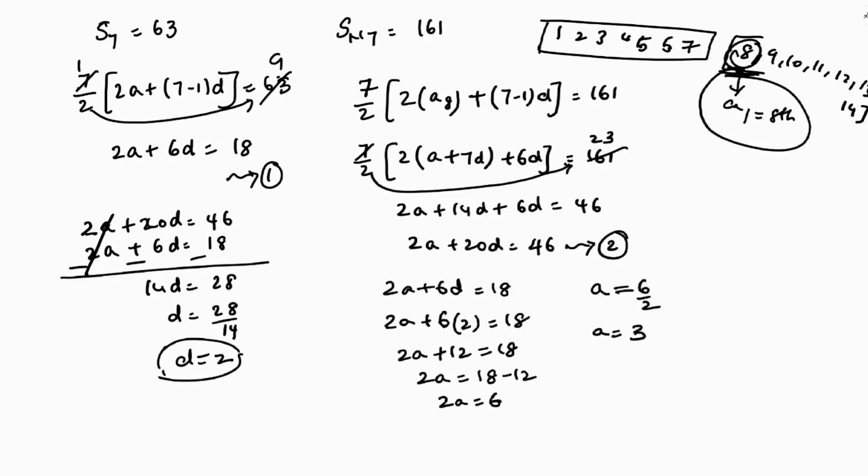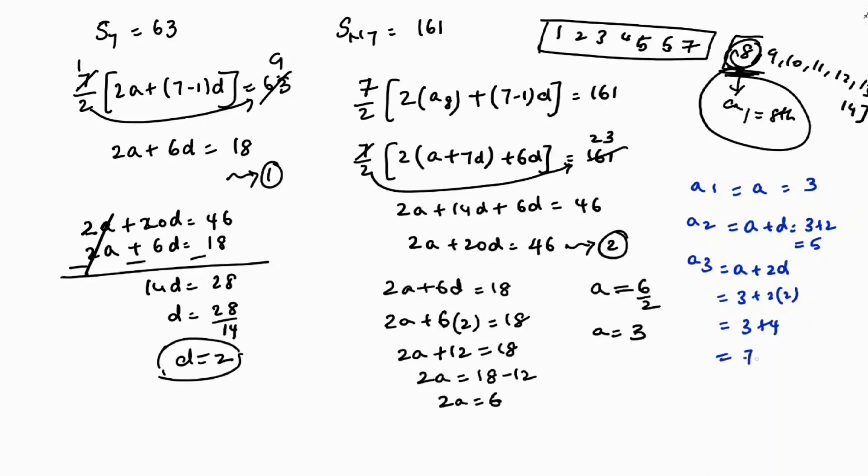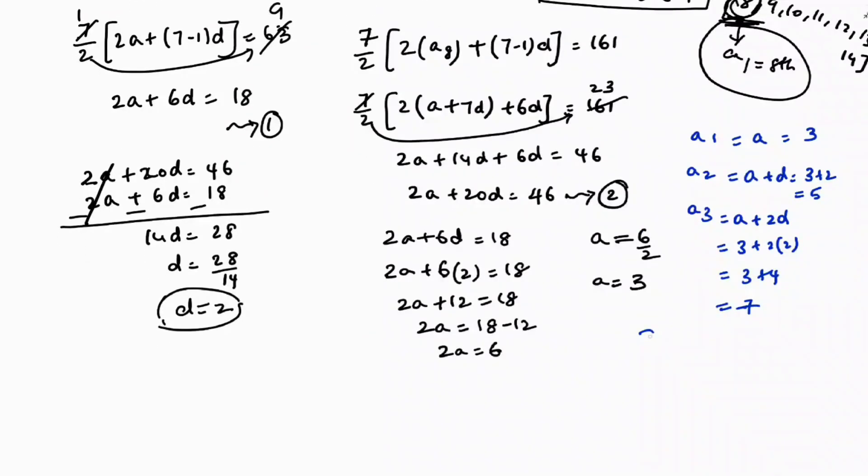So now how I simplified in the previous one, in the same way we need to find series. Find a1, a2, a3. a1 is a which is nothing but 3. a2 is a plus d which is nothing but 3 plus 2, that's 5. a3 is a plus 2d, so 3 plus 2 times 2, 3 plus 4 is nothing but 7. So the series is 3, 5, 7, so on. This is the arithmetic progression.